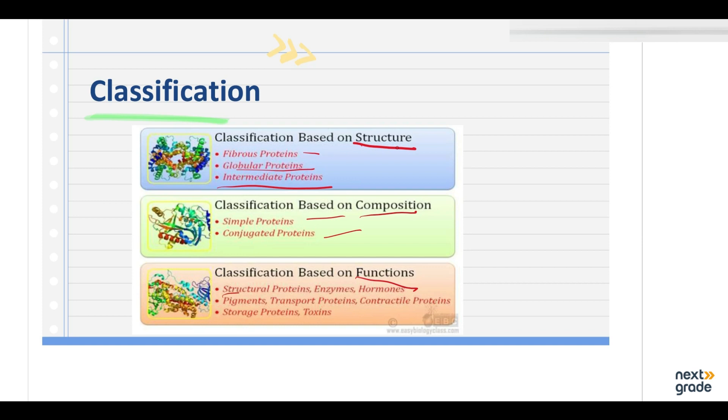After that, if it is classified on functions, then we look at the classification because of that it exists in the form of structural protein, enzymes, hormones, pigments, transport protein, contractile protein, storage protein, and there are some toxins in the form of protein. So this is the classification of protein. The most common and the most commonly studied one is on the basis of the structure, and the most common out of these three is these two: the fibrous protein and the globular protein.